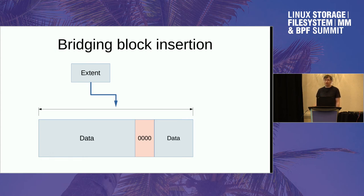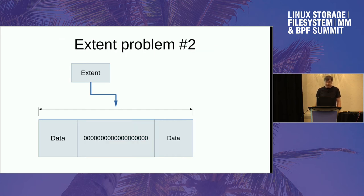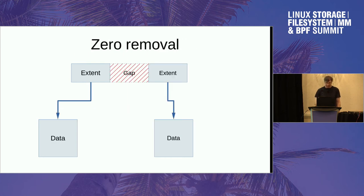It makes for a smaller extent list — basically it inserts a bridging block of zeros. The second problem is the converse of that, where the optimizer looks at the data, sees there's a huge block of zeros in the middle, and thinks it can free up some disk space by removing zeros and splitting the extents.